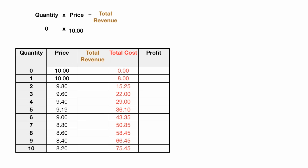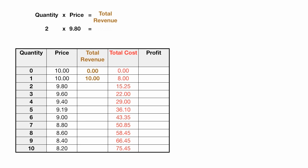Total revenue is quantity times price. So I have 0 times 10, price of 10, equal to total revenue of 0 — you don't sell anything, you don't make any revenue. A quantity of 1 times a price of 10 equals revenue of 10. Then 2 times 9.80 equals total revenue of 19.60. I'm taking the quantity column times the price column for total revenue, and now I'll fill in the rest of the values.